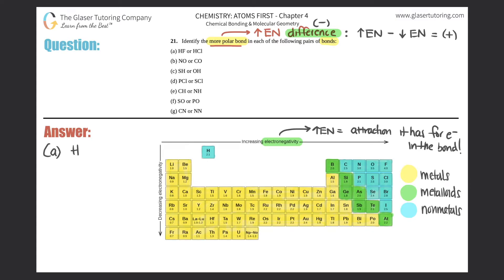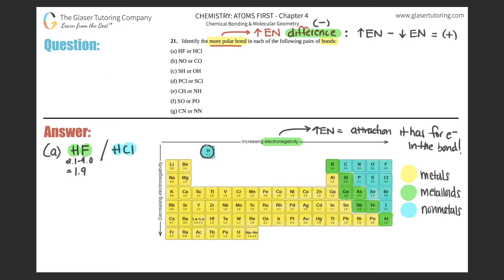For part a, between HF and HCl, whichever has the highest electronegativity difference is more polar. For HF: hydrogen has an electronegativity of 2.1 and fluorine is 4.0. Subtracting — taking the higher minus the lower, 4.0 minus 2.1 — you get 1.9. So the electronegativity difference for an HF bond is 1.9.